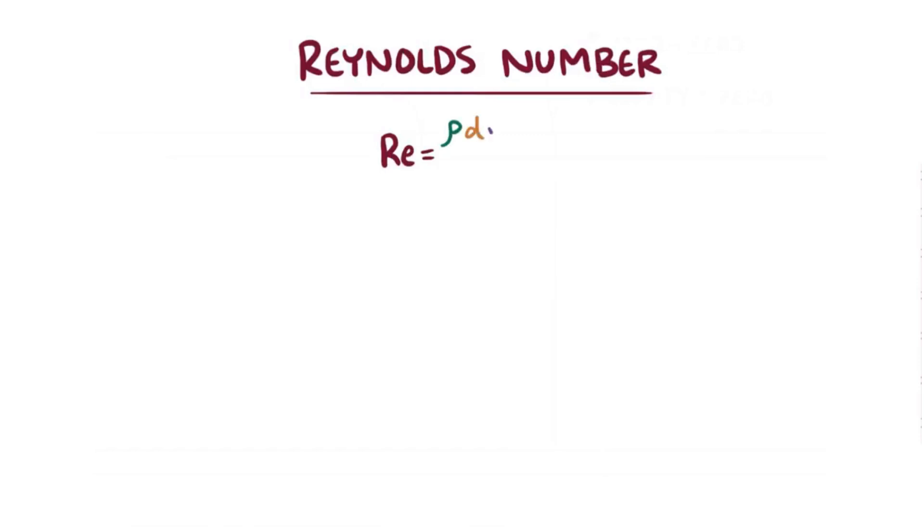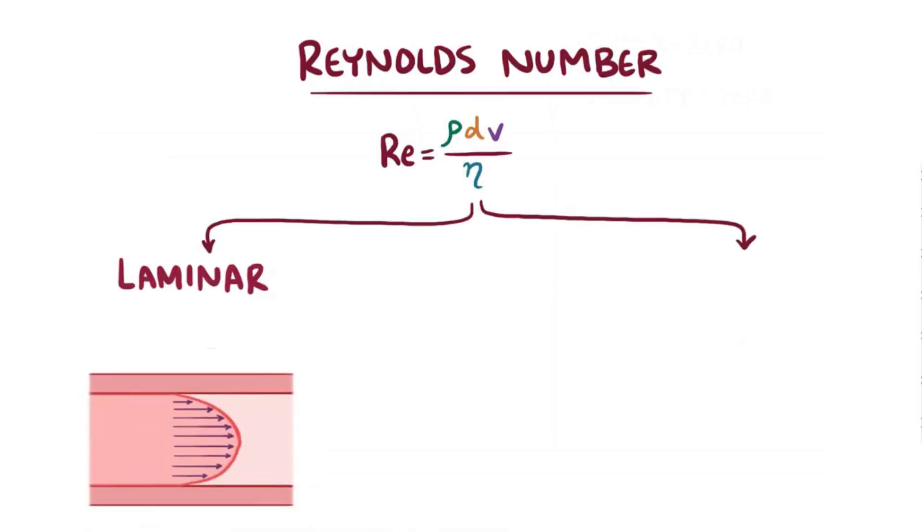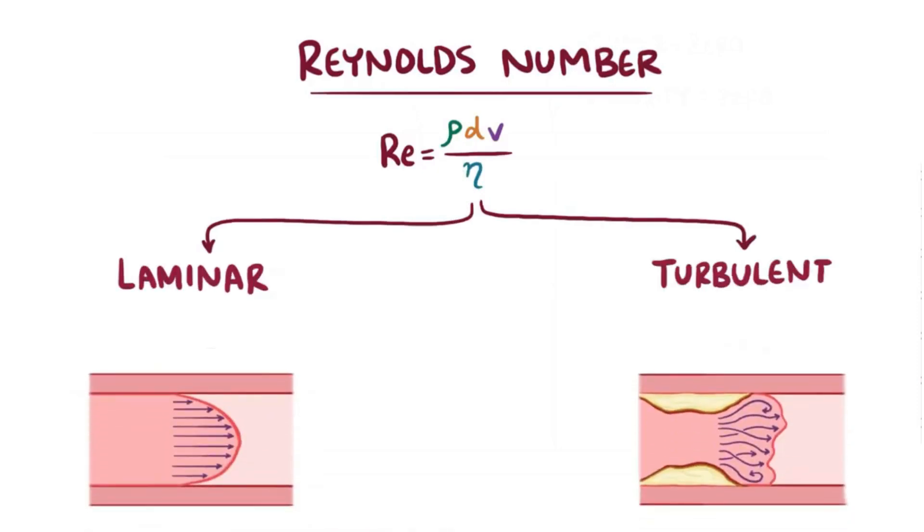Alright, as a quick recap, the Reynolds number is written as Re equals density times diameter times velocity over viscosity, and is a way to predict when fluid is either going to be laminar or turbulent. In general, Reynolds numbers below 2,000 will have laminar flow, and Reynolds numbers above 3,000 will have turbulent flow.